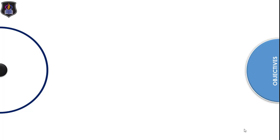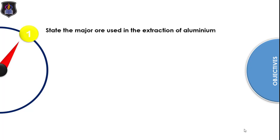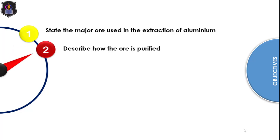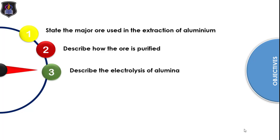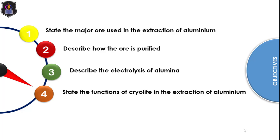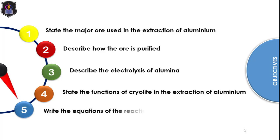At the end of this lesson, you should be able to state the major ore used in the extraction of Aluminium, describe how the ore is purified, describe the electrolysis of alumina, state the functions of cryolite in the extraction of Aluminium, and finally, you should be able to write the equations of reactions that occur during the process.